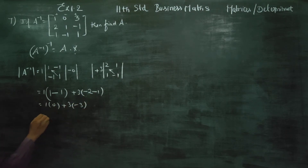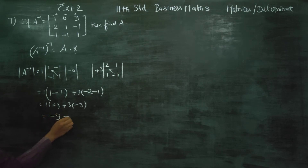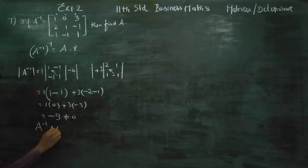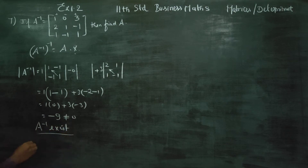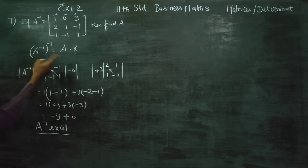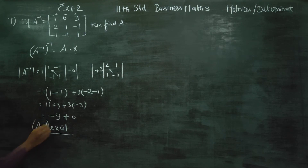One into zero is zero. Minus nine. Zero is equal. A inverse exists — the determinant is non-zero, so A inverse exists.